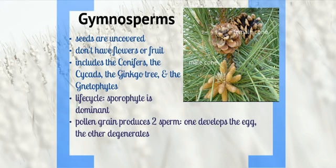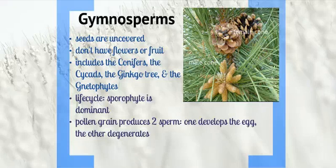Gymnosperms have uncovered seeds, usually found in cones, and don't have fruit or flowers. They include the conifers, the cycads, the ginkgo tree, and the gnetophyte. In its life cycle, the sporophyte is the dominant stage.